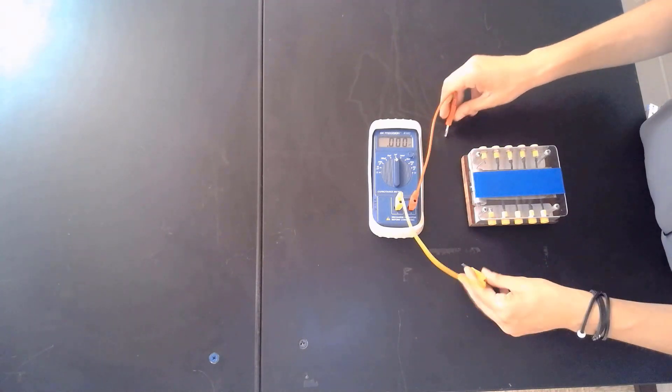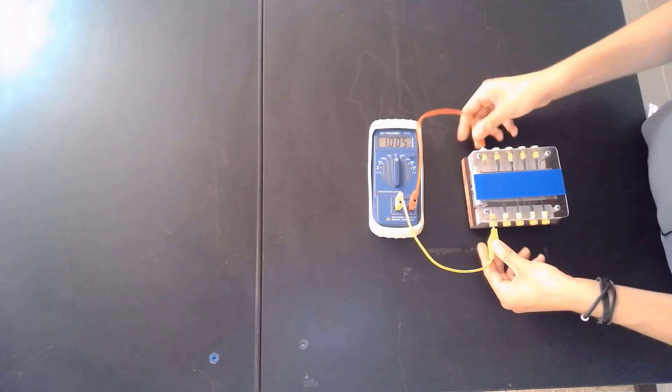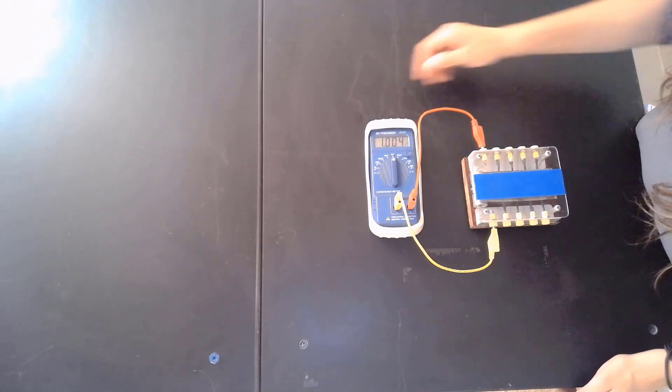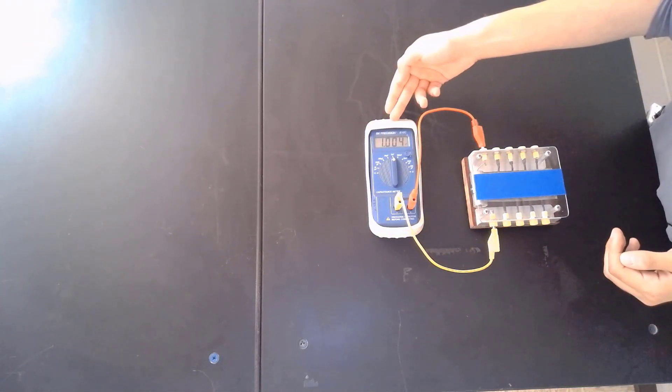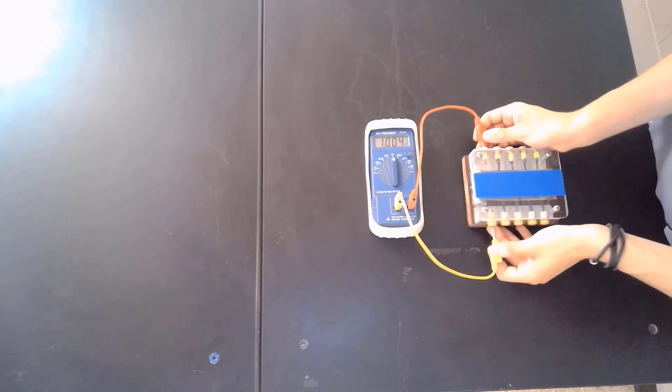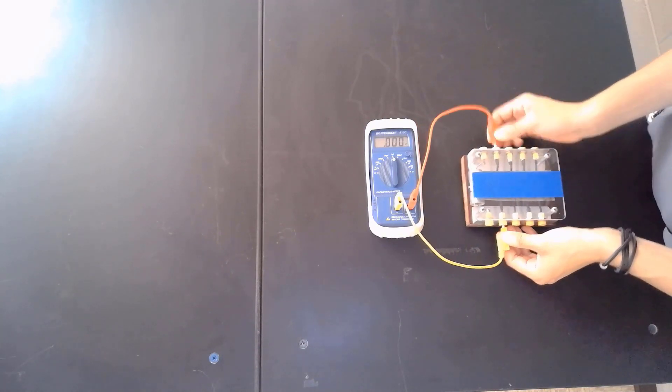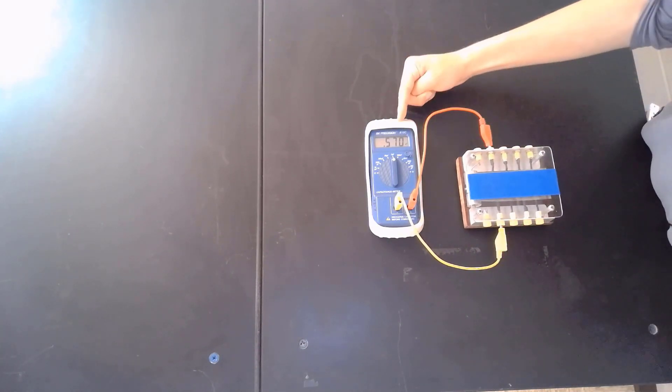So first, we'll measure C1. This is on a two microfarad scale, and you can find the reading right up here. And then for C2, the capacitance is written right here.